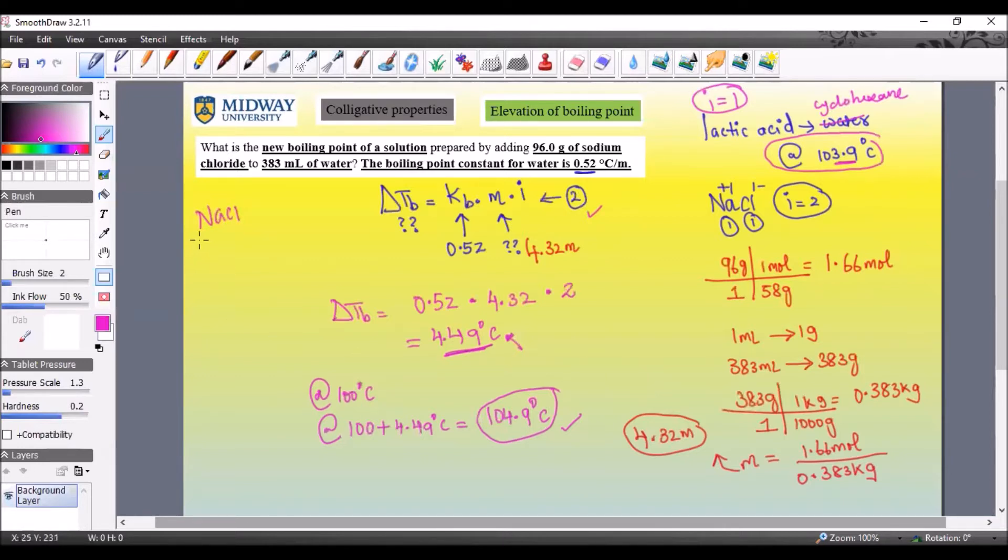What's more important is, if I give you sodium chloride, calcium chloride, and aluminum chloride - here i equals 2, here i equals 3, here i equals 4, all these are ionic compounds. So if Van't Hoff factor increases, if i increases, boiling point should increase.